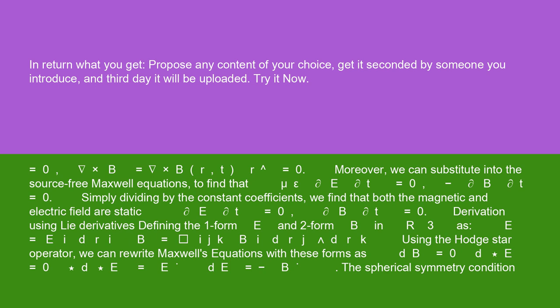Derivation using Lie derivatives: defining the one-form E and two-form B in R³ as E equals E_i dr^i, B equals epsilon_ijk B_i dr^j and dr^k. Using the Hodge star operator, we can rewrite Maxwell's equations with these forms as dB equals zero, d star E equals zero, star dE equals minus B.